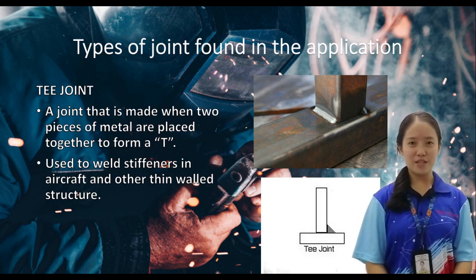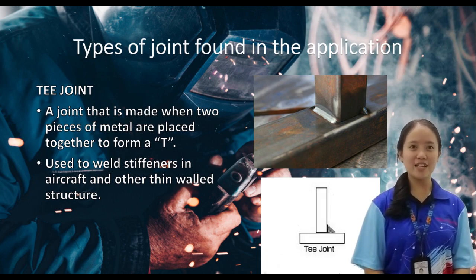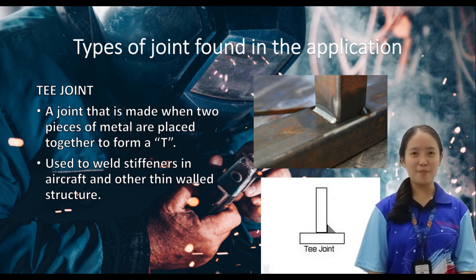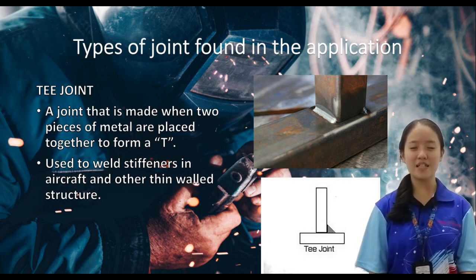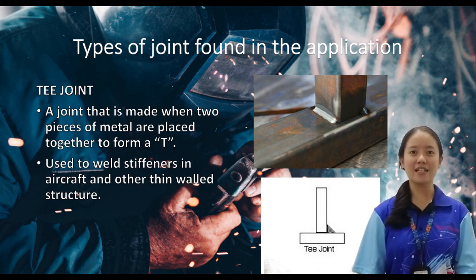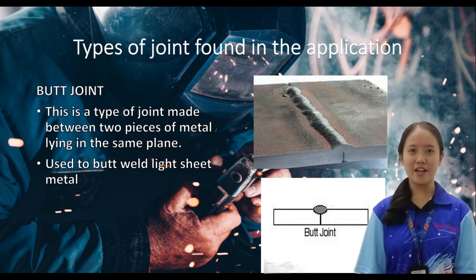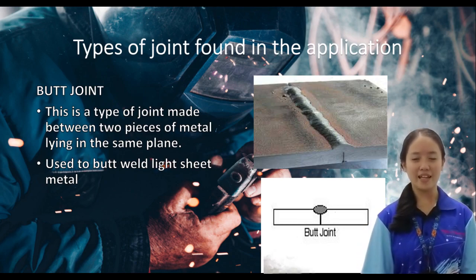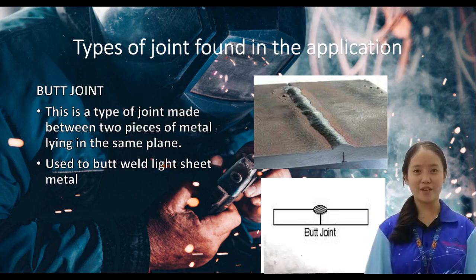Now I will present about the types of joints. The first joint is the T-joint, which is a joint made between two pieces of metal placed together to form a T. It is used to weld stiffeners in aircraft and other thin weld structures. The second joint is the butt joint, which is made between two pieces of metal lying in the same plane. It is used to butt-weld lined sheet metal.